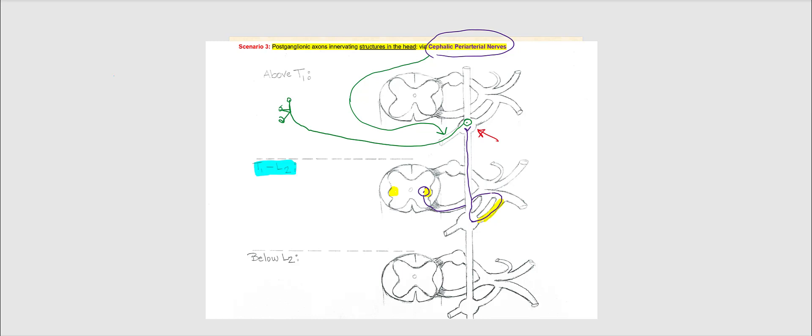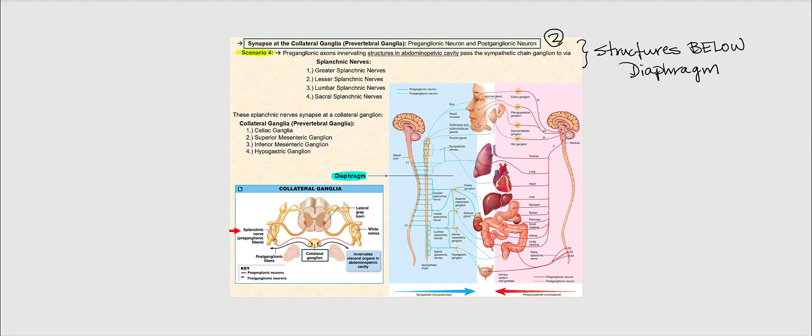Once again, the grey ramus, nor the dorsal or ventral rami, will apply in this scenario. So we're now done looking at the synapsing between the sympathetic pre-ganglionic neuron and the sympathetic post-ganglionic neuron at a sympathetic chain ganglion.